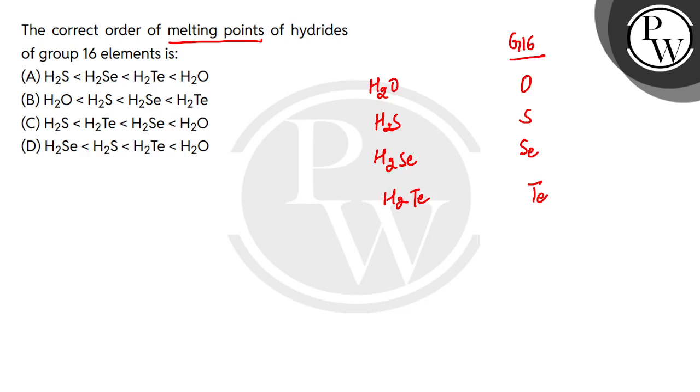If we go down the group, then what is electronegativity? It decreases. So the H2Te bond, which is an angular structure here, will not have much polarity. Electronegativity will be very low.